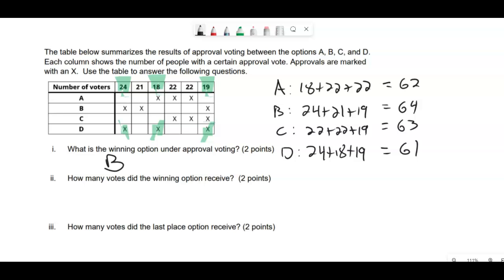How many votes did the winning option receive? 64. How many votes did the last place option receive? 61. This is what it takes to do approval voting.